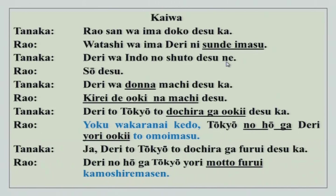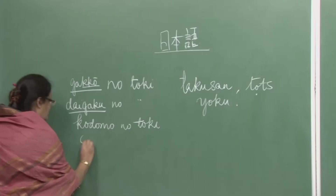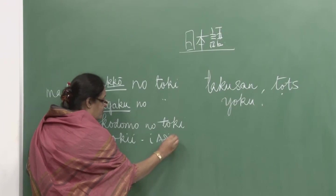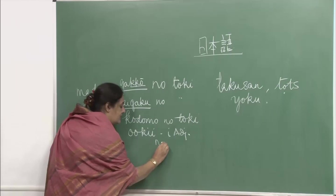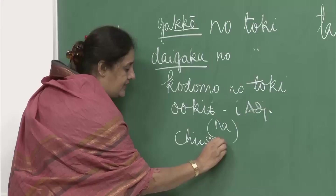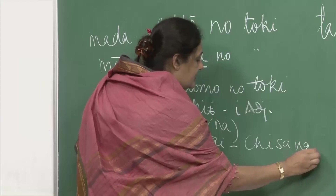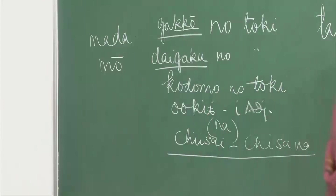You will notice that ooki is an i-adjective, but sometimes na is also used with it — ooki na. Similarly, chiisai can become chiisa na. These two adjectives do take na after them sometimes. As you can see: kirei de ooki na machi desu.